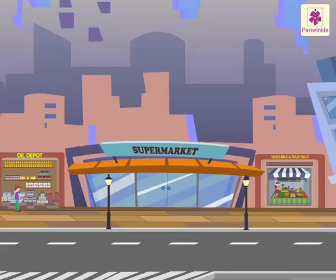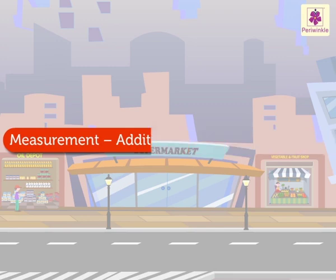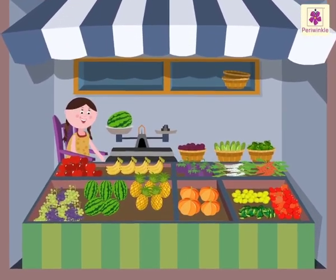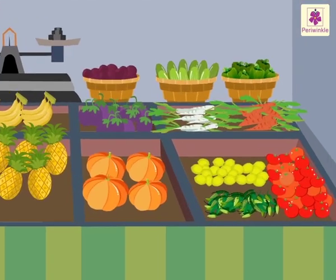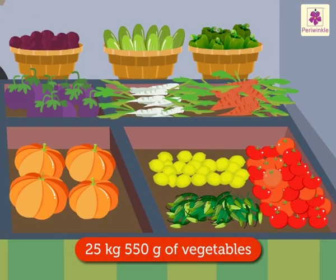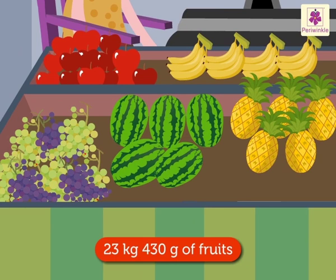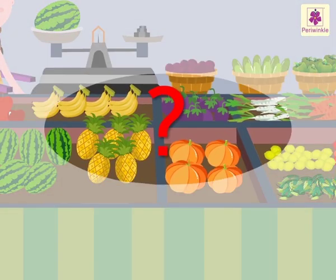Today, let us learn how to solve some addition and subtraction stories related to measurement at the market. Look, Minnie's vegetable and fruit shop. Let us see what she has. Minnie has 25 kilograms 550 grams of vegetables and 23 kilograms 430 grams of fruits. What is the total weight of the fruits and vegetables she has?